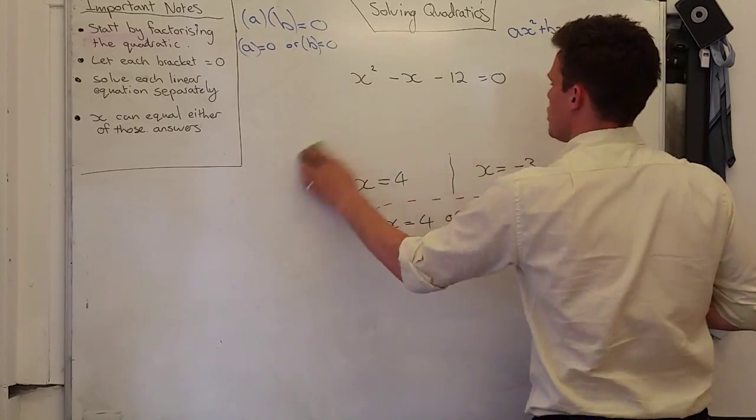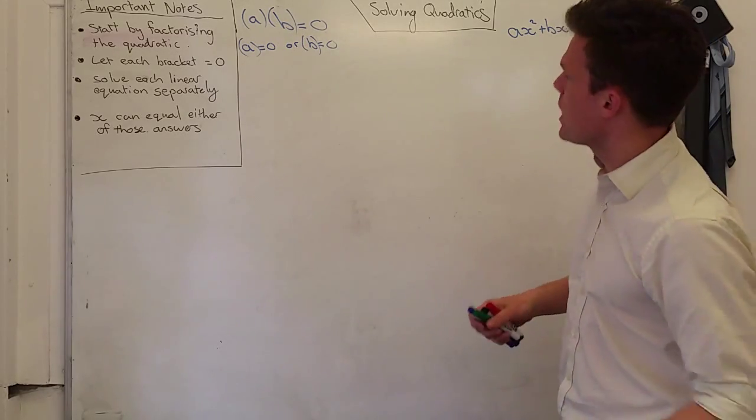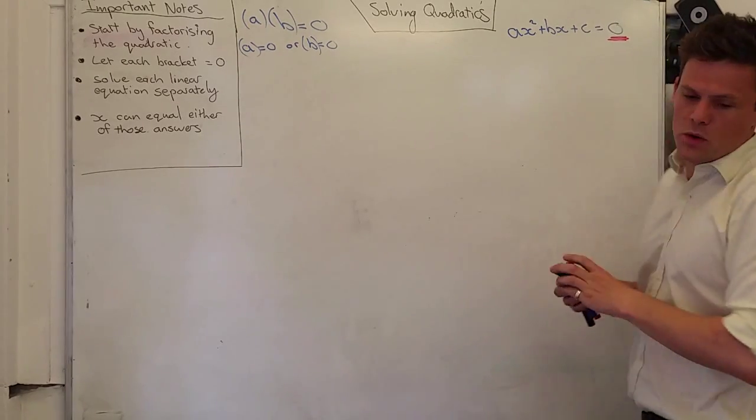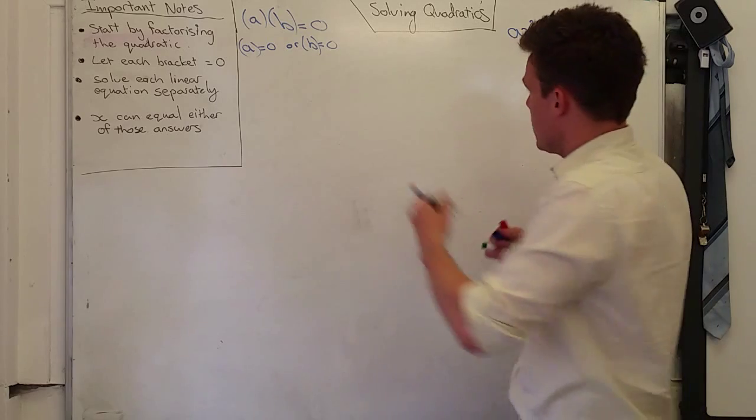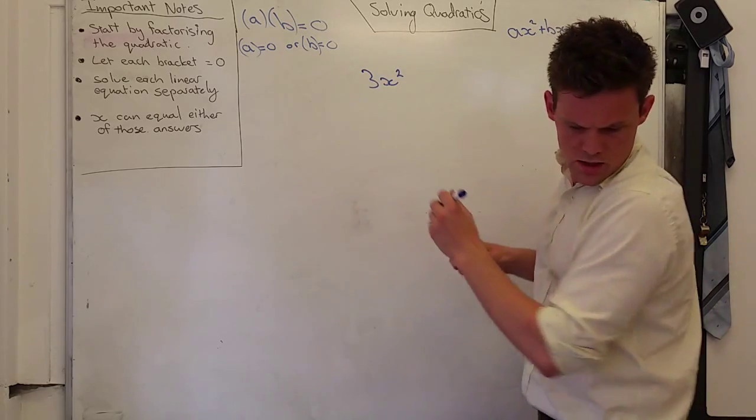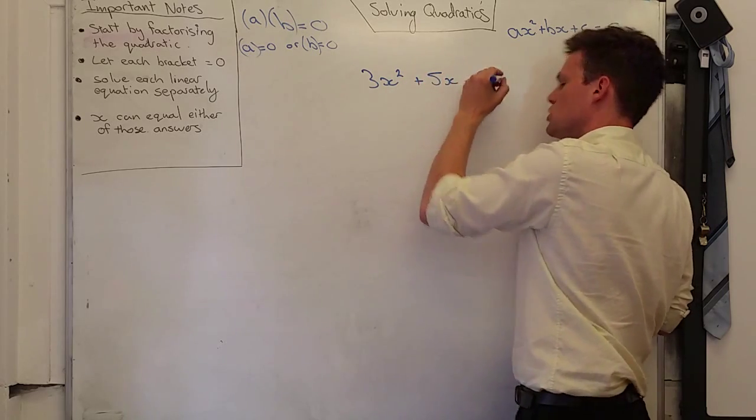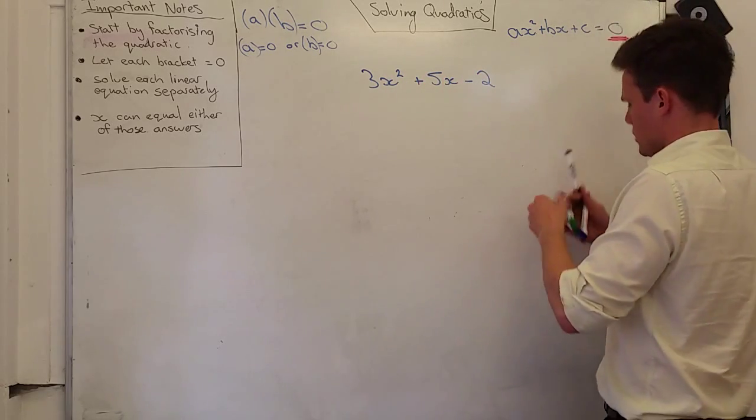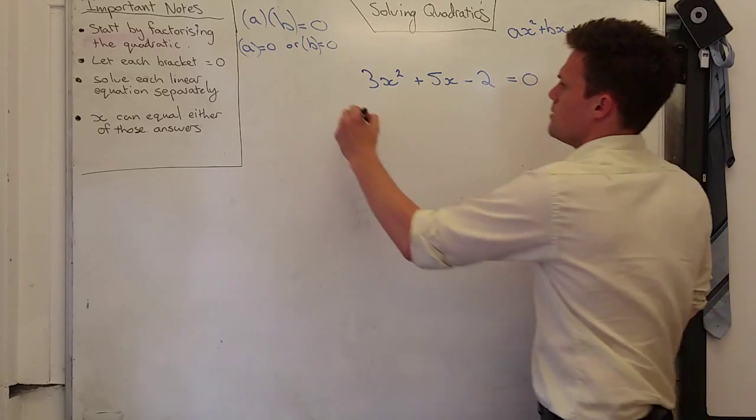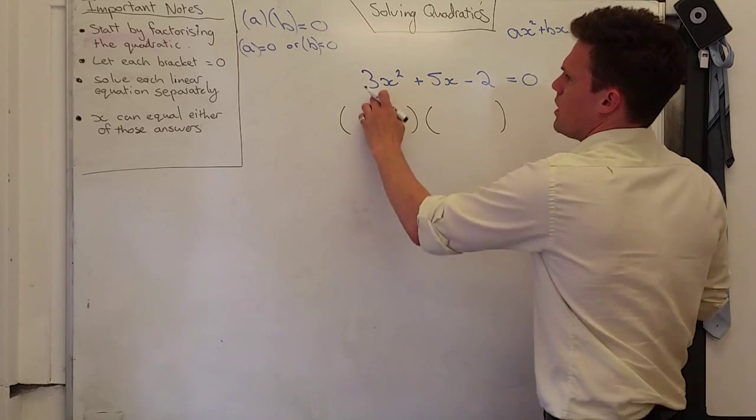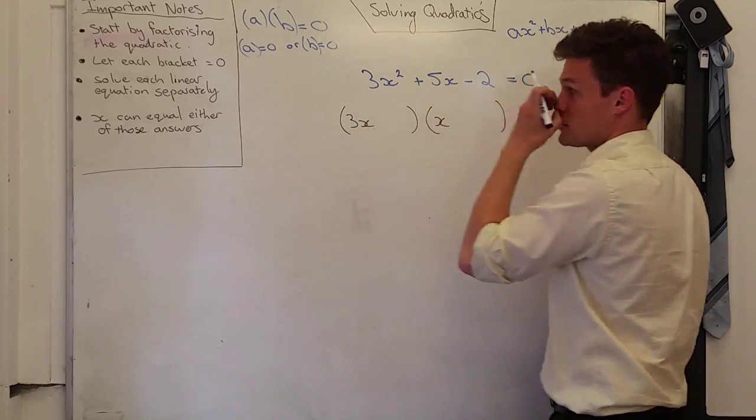I'm just putting this one in here to show you that this will also work when you have a coefficient of x squared. In other words, your a value, when you have your a value being something other than 1. So let's put in here, 3x squared plus 5x minus 2 equals 0. Alright? I can see straight away that I'm going to have to have 3x in here, and an x in here to get my x squared value.